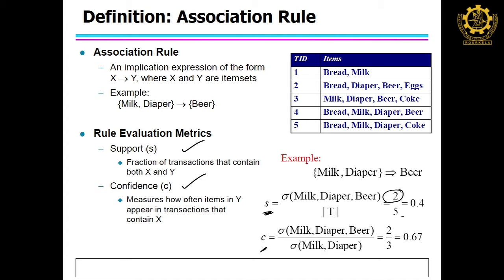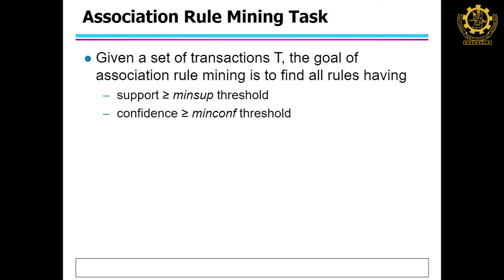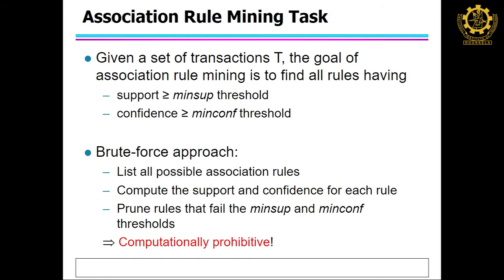What is confidence? Confidence is how many times the occurrence of the entire rule — if the rule is X to Y — for example, the rule is milk, diaper to beer. How many times the entire itemset occurred, divided by how many times the left-side itemset occurred — that gives you the confidence. Now if we have a threshold, the threshold can be different for support and confidence, or the same. This is the formal definition of association rule mining: given a set of transactions, the goal is to find all rules having minimum support and minimum confidence. The brute force approach lists all possible association rules, which is computationally very intensive, so we need a systematic way to solve this problem.